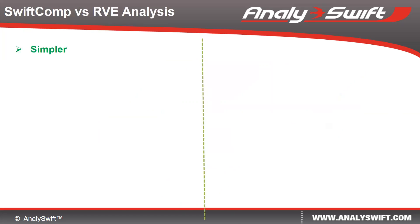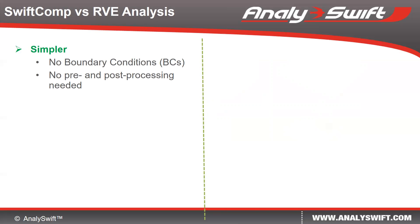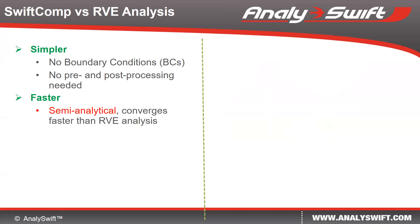It is worthwhile to point out the difference between SWIFT-CON and RVE analysis. First, SWIFT-CON is simpler because the users are not required to apply boundary conditions — no pre- and post-processing is needed. SWIFT-CON is also faster because it's a semi-analytical method and converges faster than RVE analysis.